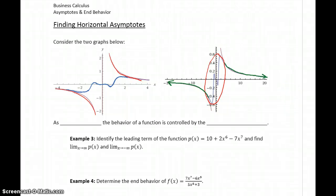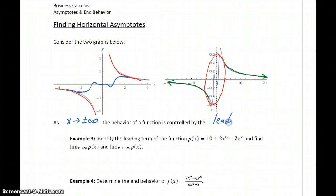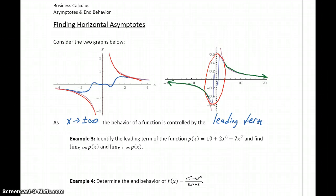The reason for that is that as x approaches either positive or negative infinity — those extreme values — the behavior of a function is always going to be controlled by its leading term. Essentially, there's one term in a function that increases, decreases, or changes so much faster than the rest of the function.